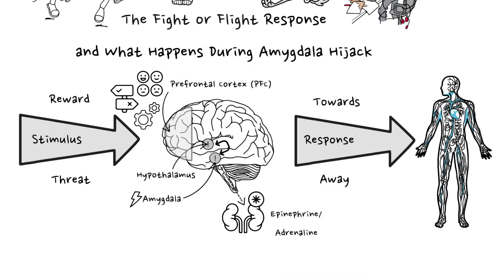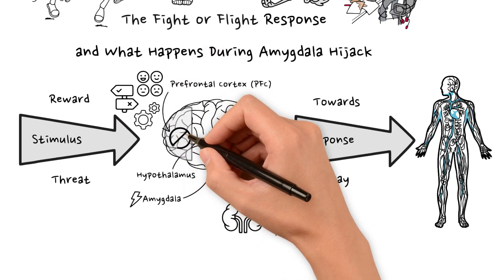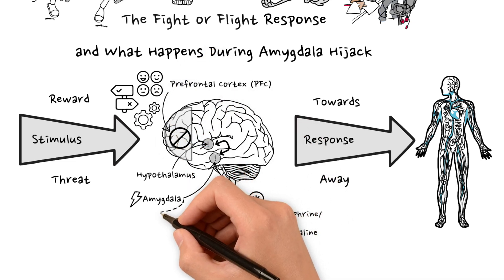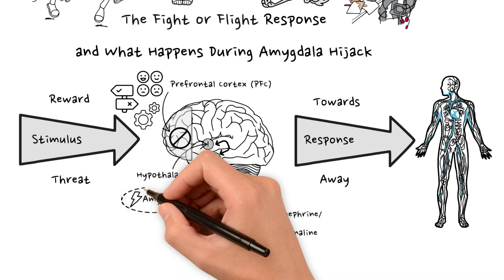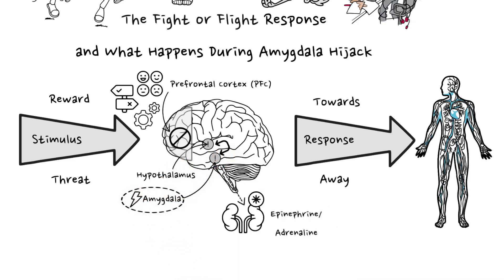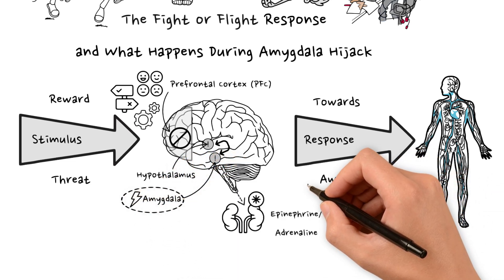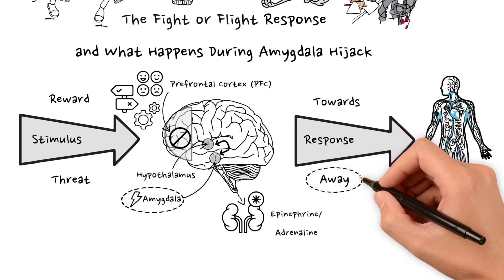In threat state, these areas can be temporarily crippled. The amygdala overrides the frontal lobes if it perceives something as a significant threat. When this happens, our mental responses become more primal and less rational.